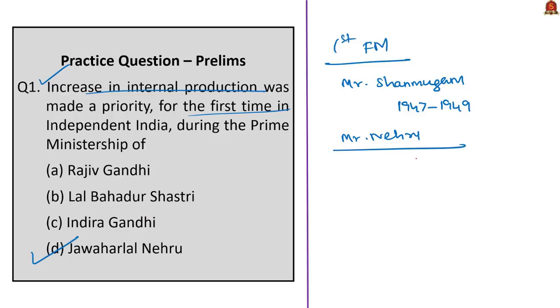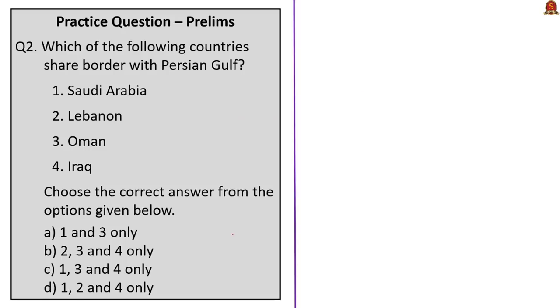The answer for this question is option D: Jawaharlal Nehru. The next question: which of the following countries share a border with the Persian Gulf? The options given are Saudi Arabia, Lebanon, Oman, and Iraq.